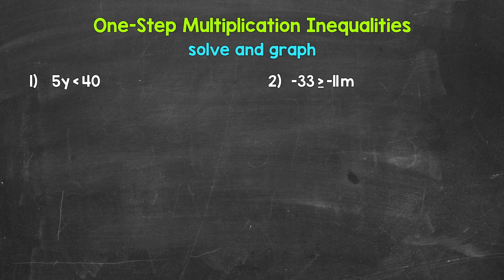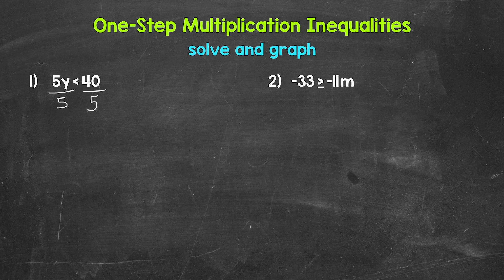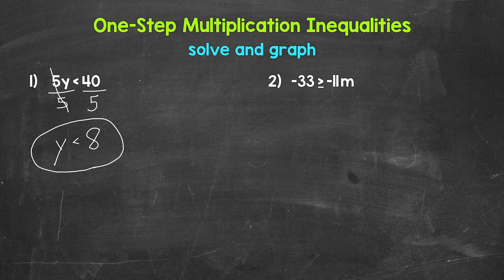Let's jump into number one, where we have 5y is less than 40 — five times Y is less than 40. So we are multiplying Y by five. We need the inverse operation of multiplication, which is division. So let's divide both sides of the inequality by five. The fives cancel each other out, Y is now isolated, and on the right side, 40 divided by five gives us eight. So Y is less than eight — that's our answer.